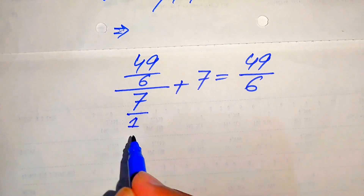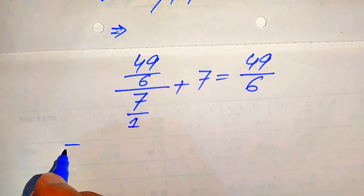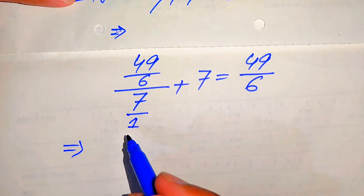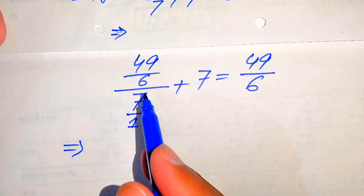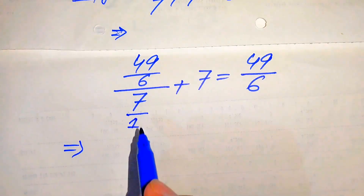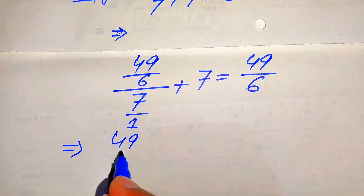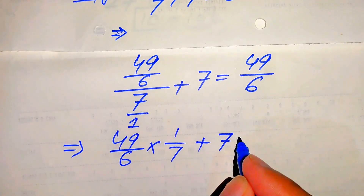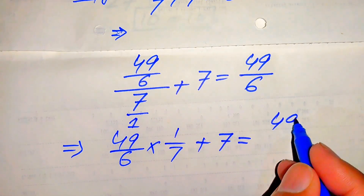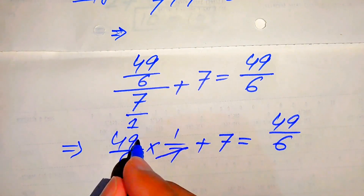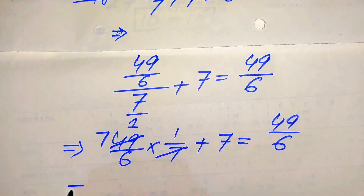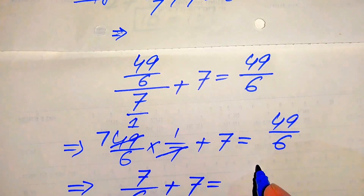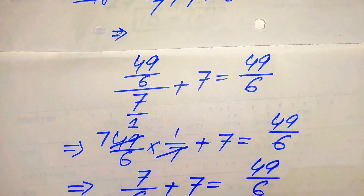Since we have a fraction over a fraction, the fraction in the denominator is taken as its reciprocal and multiplied by the numerator fraction. So this becomes 49 over 6 multiplied by 1 over 7, plus 7, equals 49 over 6. Since 49 divided by 7 is 7, we get 7 over 6 plus 7 equals 49 over 6.